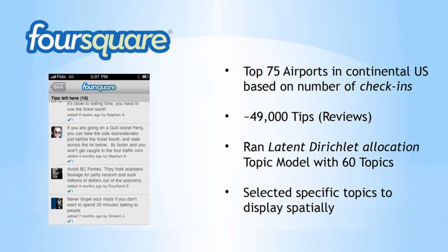I took 29,000 tips or reviews from these locations and ran a Latent Dirichlet Allocation model, which is a generalized topic model using a bag-of-words unsupervised approach to extract 60 different topics. These are the words that are often seen together when processed. I selected a few of these topics to display spatially to give you an idea of what we're looking at.